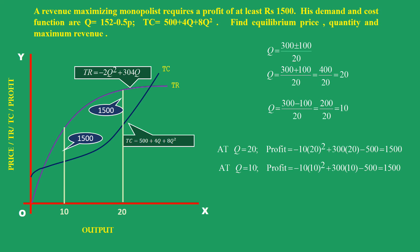Plug in the values of Q in the total revenue function. At Q = 20, total revenue is Rs. 5,280. At Q = 10, total revenue is Rs. 2,840.